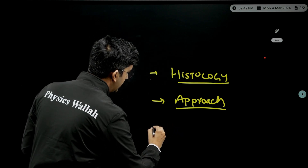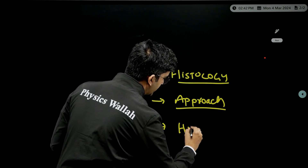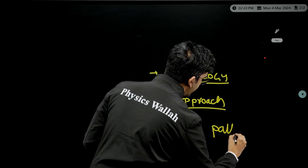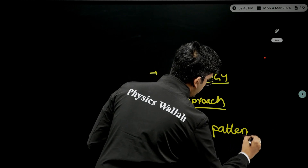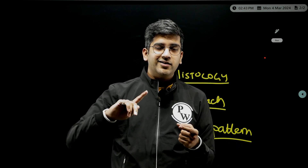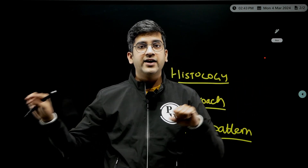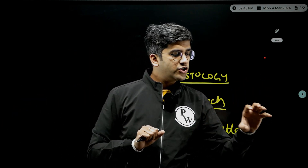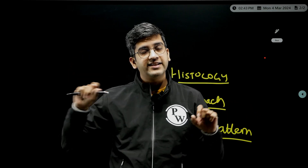The third video covers histopathological patterns required at the initial stage of soft tissue neoplasm diagnosis. These include the round cell pattern, spindle cell pattern, pleomorphic pattern, epithelioid pattern, and biphasic pattern — the primary five patterns. Once you understand these, you can apply logic: if you see a spindle cell with a whorled appearance, think of this diagnosis; if you see a spindle cell with a fascicular arrangement, think of that diagnosis.